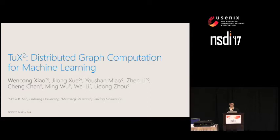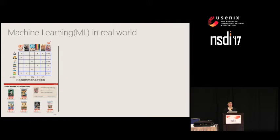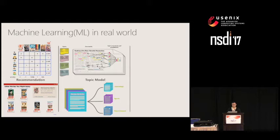Machine learning is widely used to address real-world production challenges. For example, recommendation systems drive movie websites like Netflix, topic models help with news classification, and click prediction algorithms help with advertisement display in search engines.